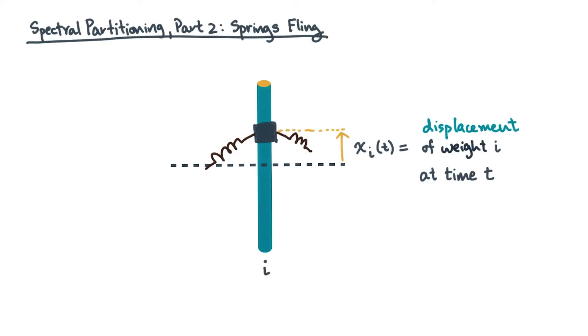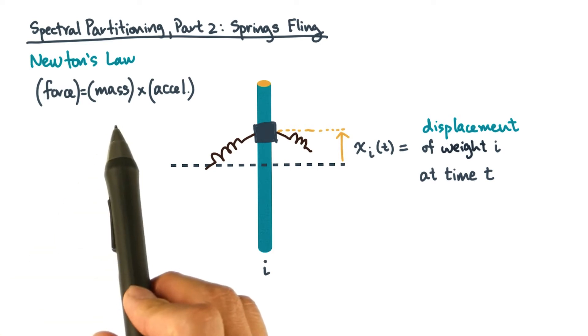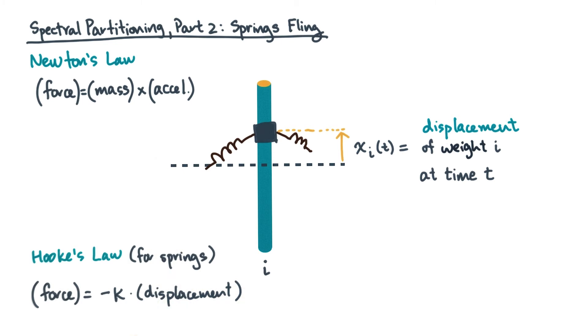Here's a quick reminder. Newton's Law says that the net force acting on an object causes it to accelerate in linear proportion to its mass. Hooke's Law says that the force from a spring is proportional to how much it's stretched. Hooke's Law holds if this degree of stretching or displacement is relatively small.